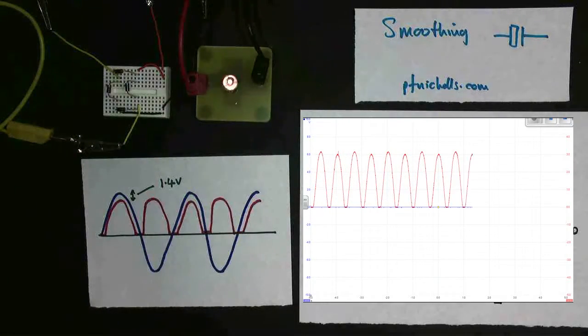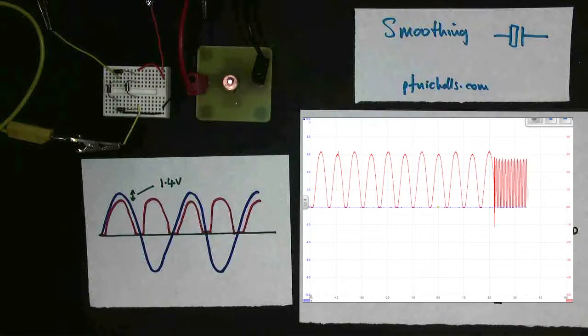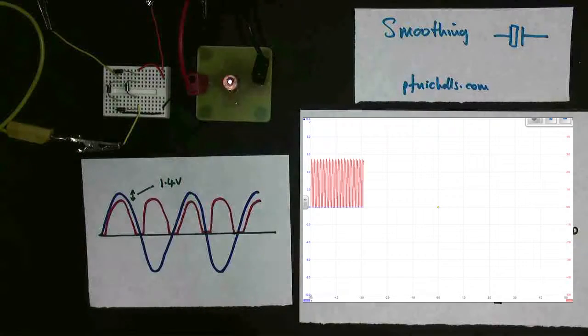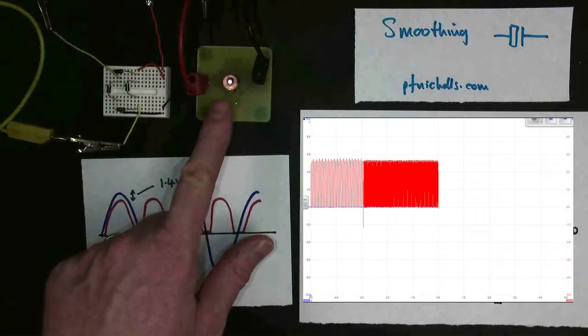Well, I can do this. I can turn the frequency up. And that appears to be a bit smoother. I can turn the frequency up even higher. And now my bulb appears to be permanently on.